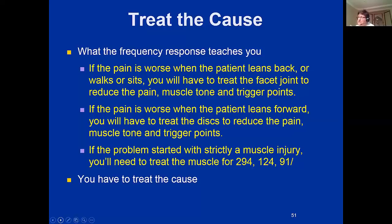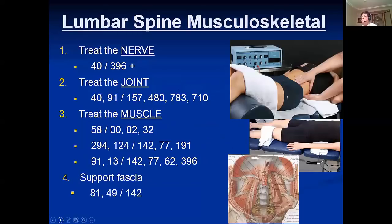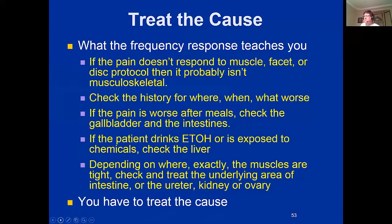The musculoskeletal treatment: treat the nerve, treat the facet joint or the disc — treat what's causing the muscles to be tight. The answer is in the history: where does it hurt, when does it hurt, what makes it worse? If the pain is worse after meals, check the gallbladder and intestines. If the patient drinks a lot of alcohol or is exposed to chemicals, check the liver. Depending on exactly where the muscles are tight, check and treat the underlying viscera — the intestine, the ureter, the kidney, or the ovary.